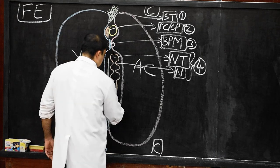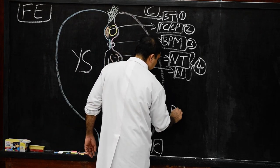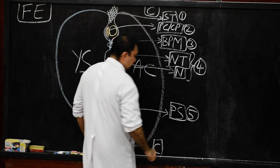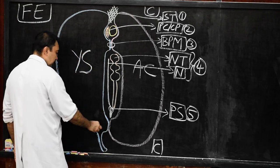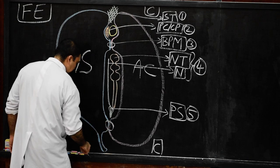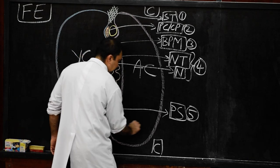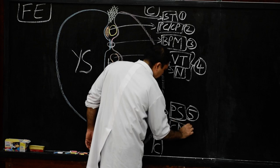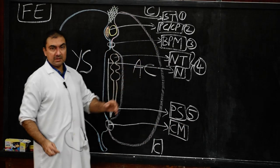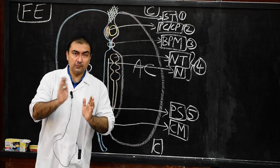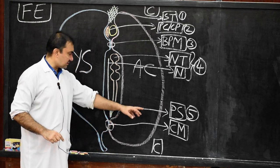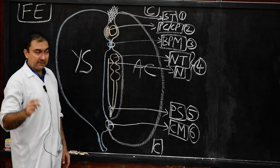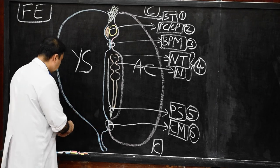Structure number six is the cloacal membrane — draw a ring-like structure marked as cloacal membrane. Like the buccopharyngeal membrane, it is ectoderm and endoderm with no mesoderm in between. Cloacal membrane is structure number six, and then comes structure number seven.